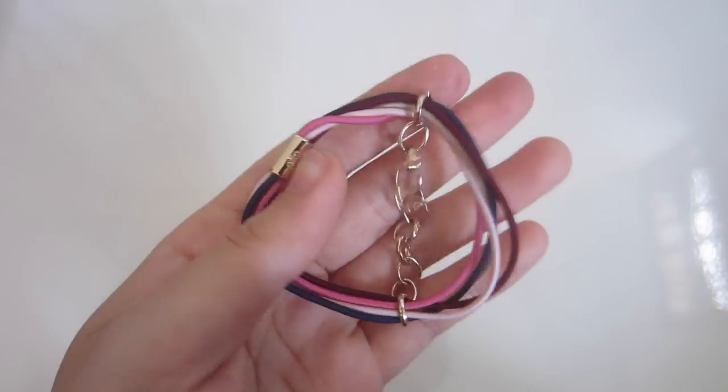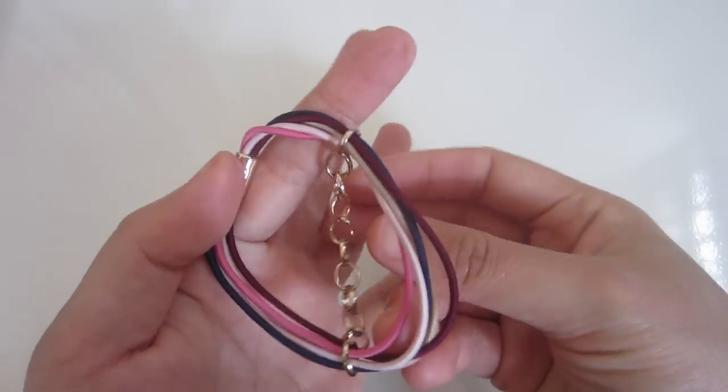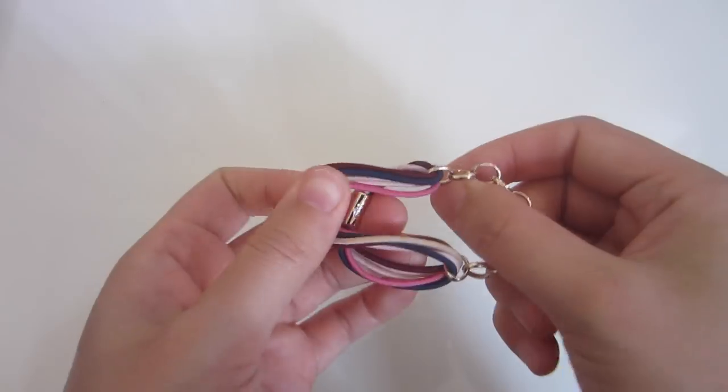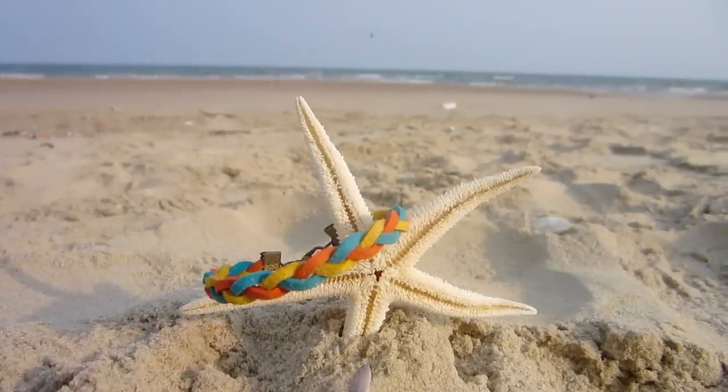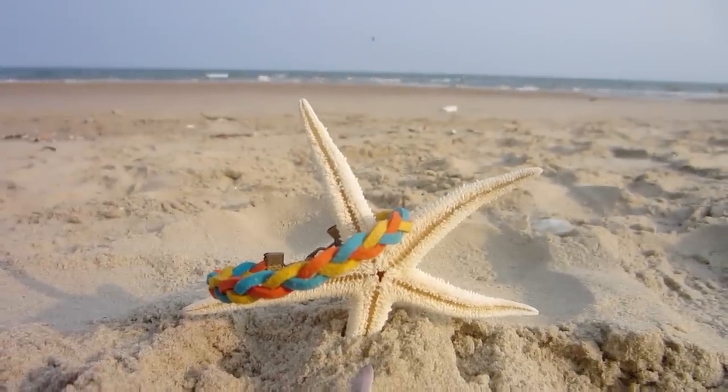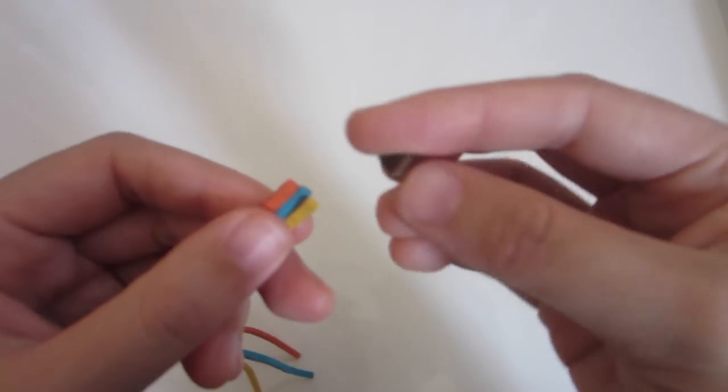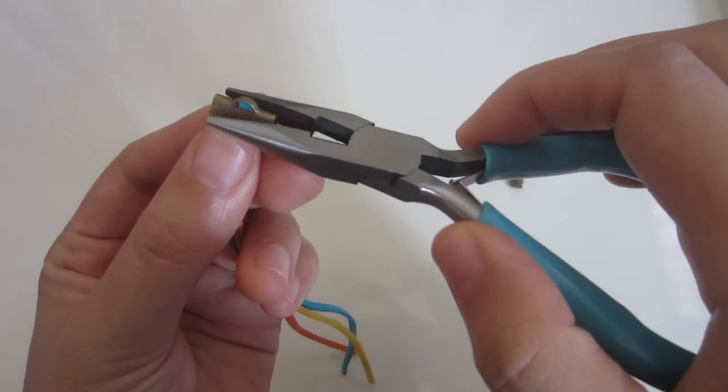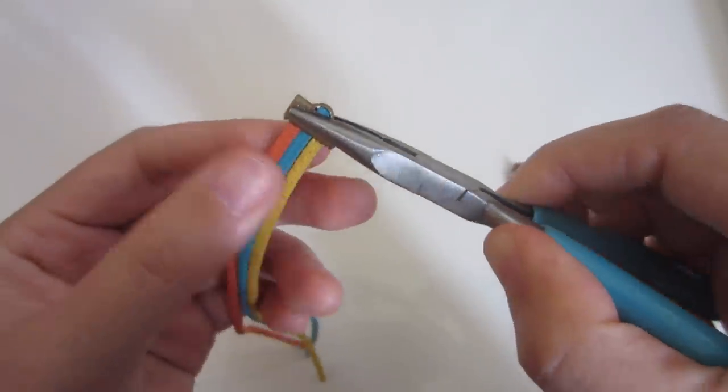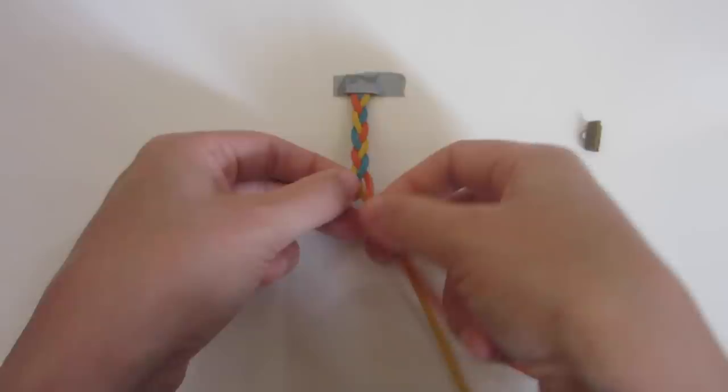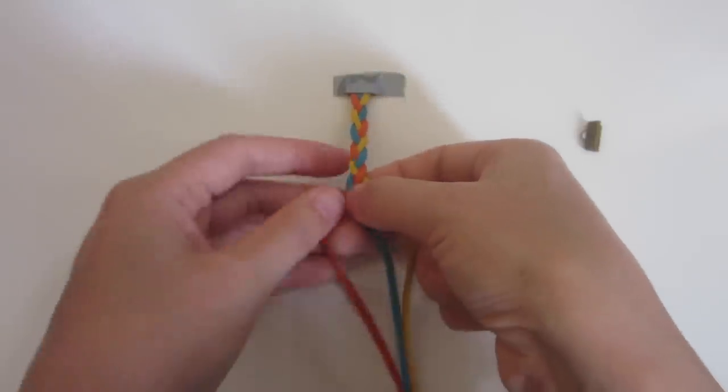Let's move on to the second bracelet. Cut three ten-inch strands of leather lace, put your ribbon clamp on, and secure it with pliers. Tape the clamp end down on a flat surface and start braiding it. Make sure you keep the strands completely flat while braiding.